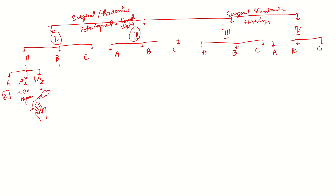Stage 1B involves more than or equal to 50% myometrial involvement with no or focal LVSI. Stage 1C includes aggressive histology tumors. In stage 1C, the tumor is limited to the endometrium — whereas in 1A1 it was only low-grade tumors. The 'C' substage carries the highest level and represents the most aggressive histology.